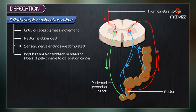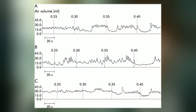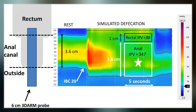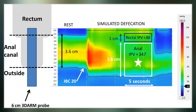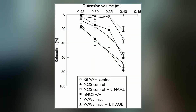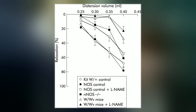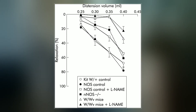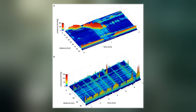The RAIR provides the upper anal canal with the ability to discriminate between flatus and fecal material. The ability of the rectum to discriminate between gaseous, liquid, and solid contents is essential to the ability to voluntarily control defecation. The RAIR allows for voluntary flatulation to occur without also eliminating solid waste, irrespective of the presence of fecal material in the anal canal.